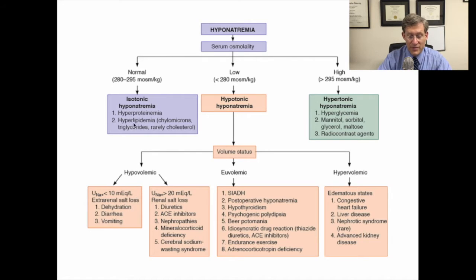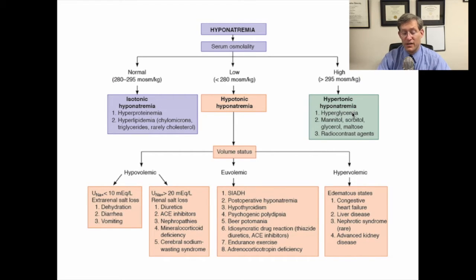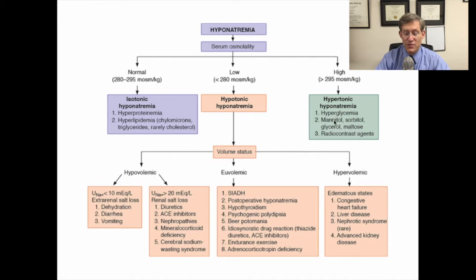There are examples where patients can have a normal serum osmolality, and we describe that as isotonic hyponatremia. Examples of the etiology of that include hyperproteinemia and hyperlipidemia syndromes. There are also rare examples where patients can have hypertonic hyponatremia. These can be caused by hyperglycemia, mannitol, sorbitol, and other similar agents. But the preponderance of patients who have true hyponatremia have true hypotonic hyponatremia.